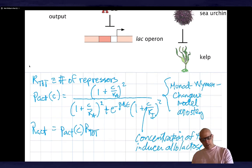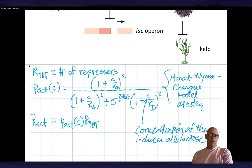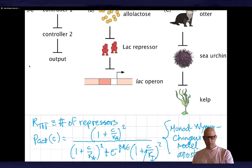You can see from this equation that as we increase the amount of allolactose, the number of active repressors is going to go down. Because in the presence of allolactose, the repressor falls off of the DNA. This guy is the active state - it binds to the DNA and represses the gene.